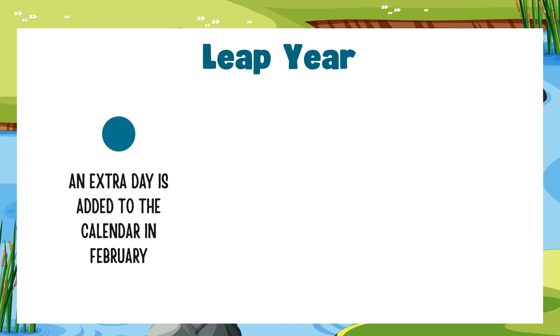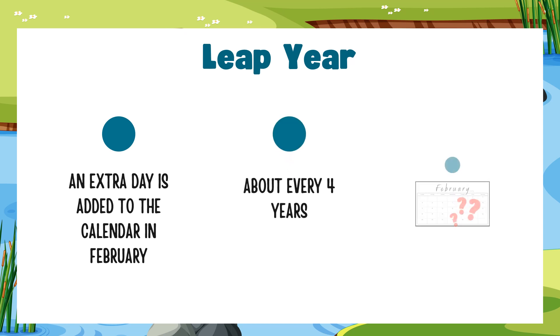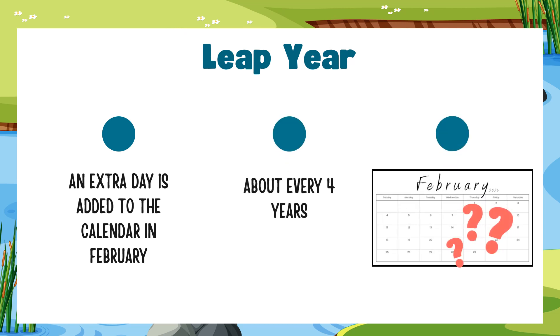On a leap year, an extra day is added to the calendar in February. It happens about every four years. The explanation can be a little complicated, so let's try to keep it simple.